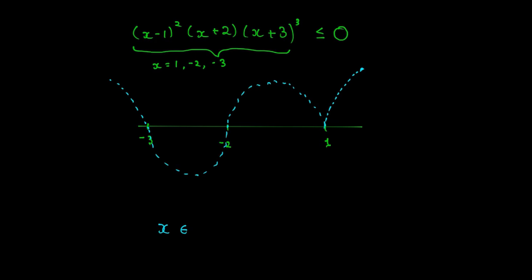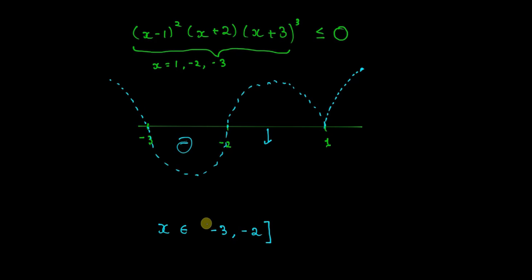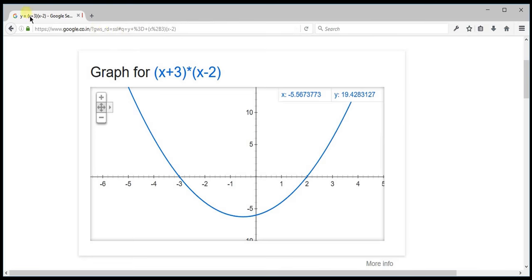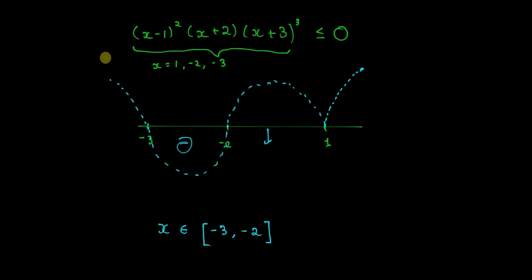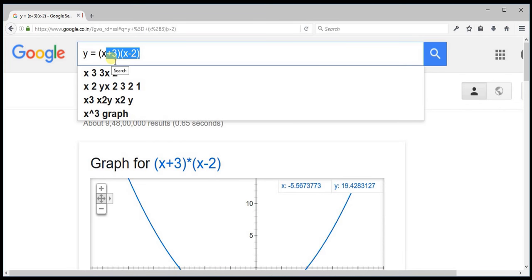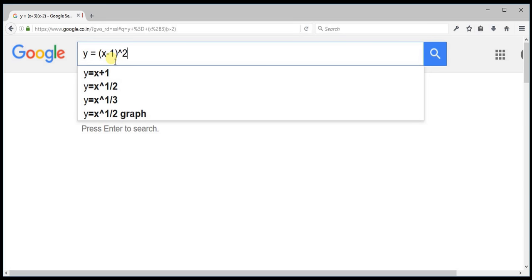We are searching for where the expression is less than or equal to 0 — below the x-axis. That region is from minus 3 to minus 2. Because this is a non-strict inequality (less than or equal to), the endpoints are included: x belongs to [minus 3, minus 2].